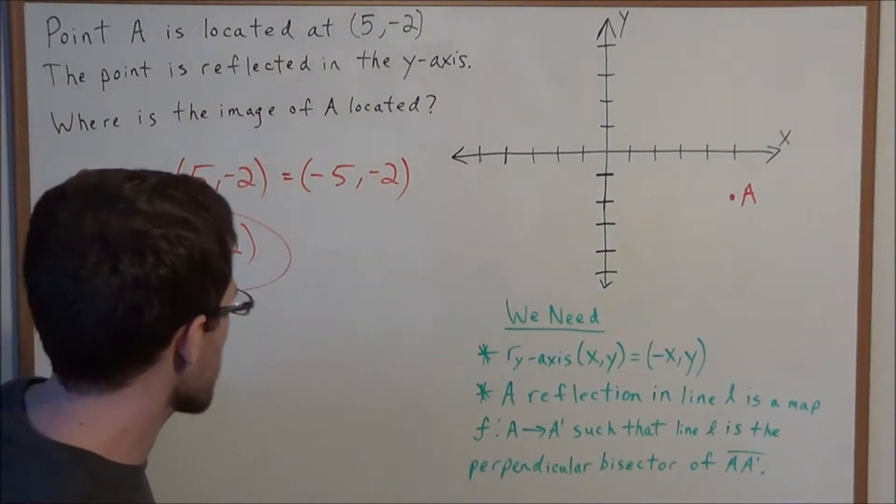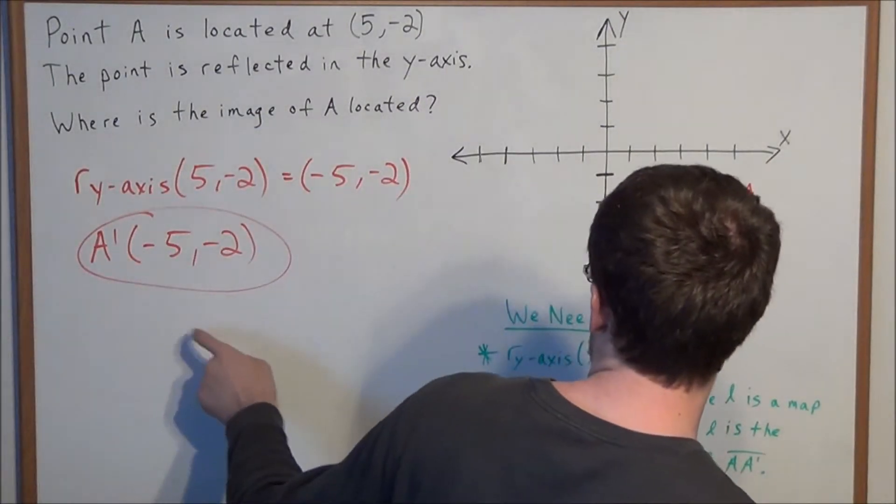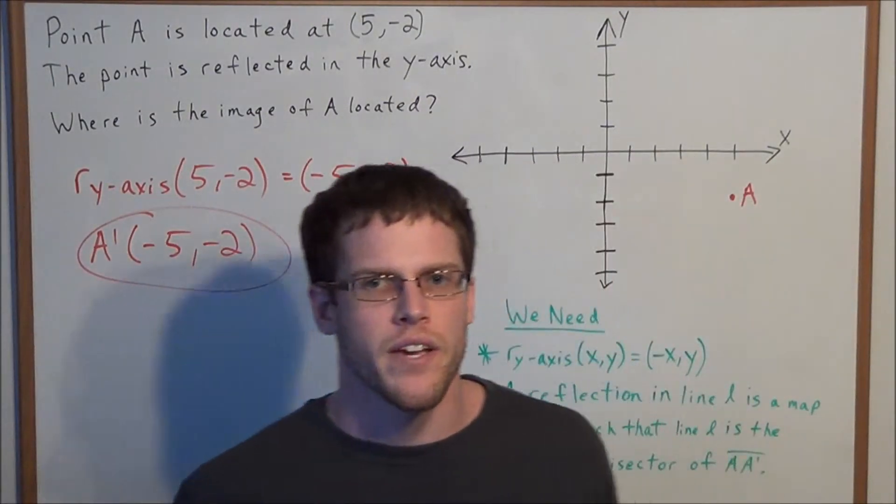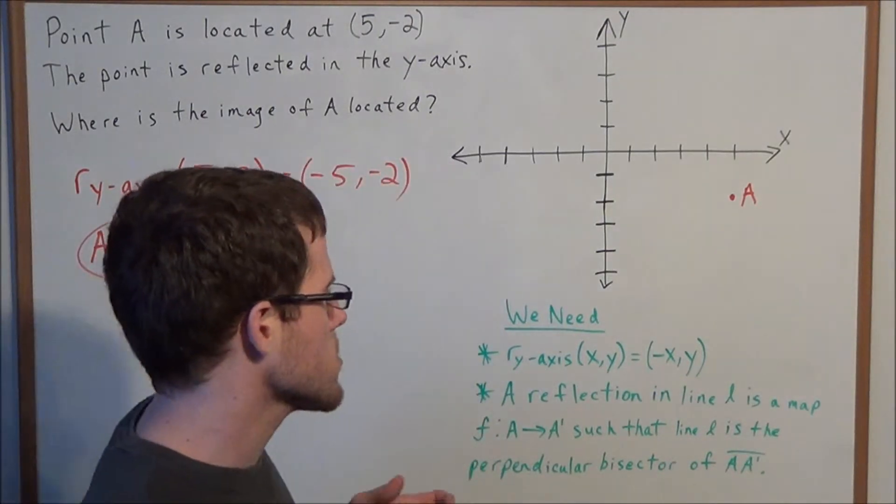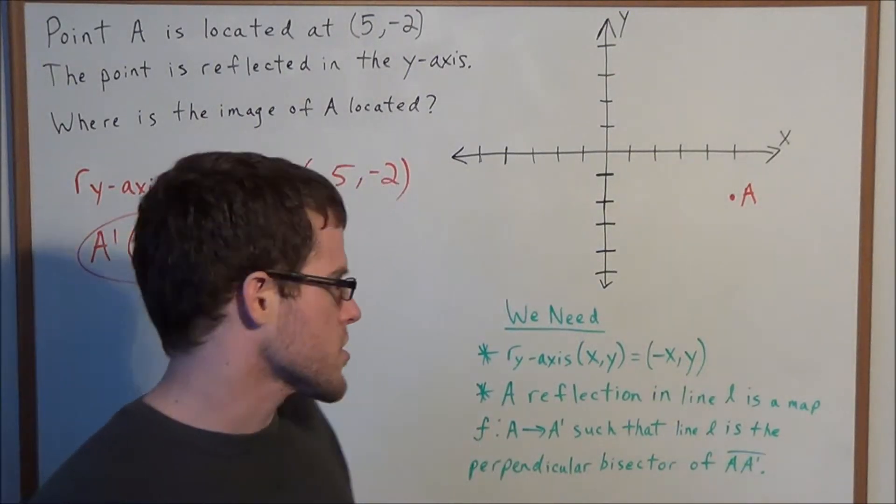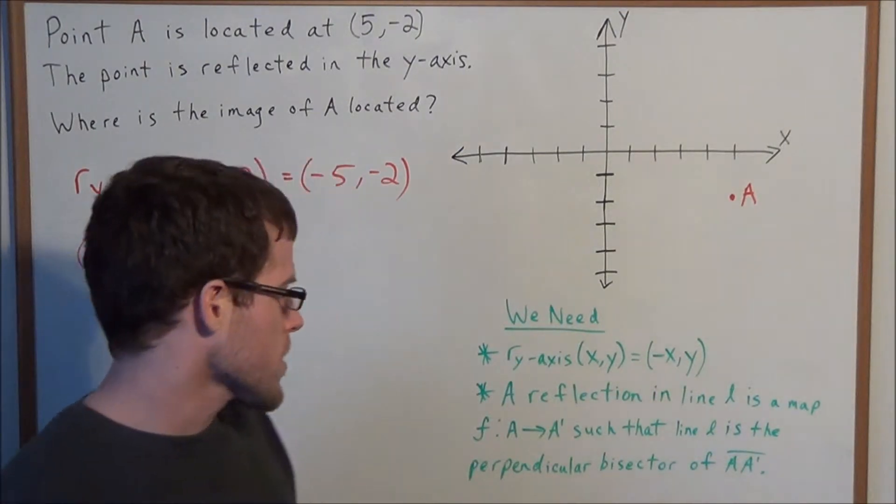But I want to investigate more why the image of A is negative 5, negative 2, because this equation really doesn't reveal much about reflections. So let's look at the definition of a reflection.